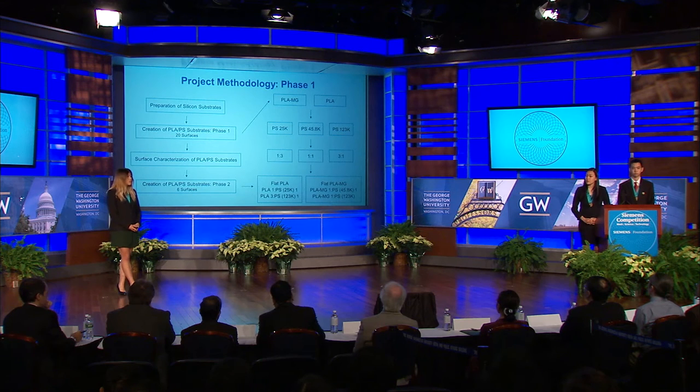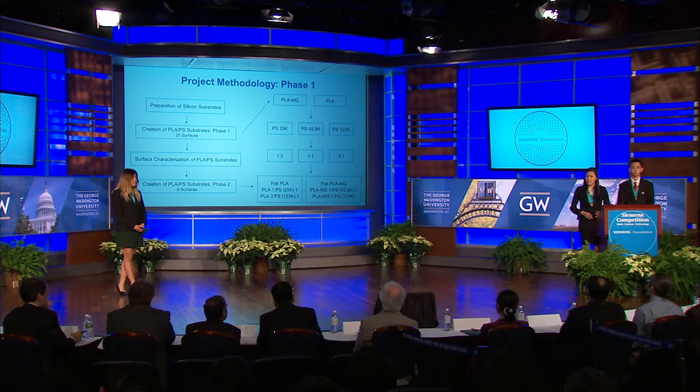After preparing one-by-one centimeter silicon substrates, we individually solubilized two forms of PLA and three molecular weights of PS with chloroform. These solutions were then mixed together in three volume ratios of PLA to PS, and the final solutions were spun cast onto silicon substrates to form thin films. The thin films were then annealed in a vacuum oven at 180 degrees Celsius for 72 hours. The substrates were then left in toluene treatment for 12 hours to fully dissolve the PS phase. We imaged and analyzed the resulting 20 surfaces using atomic force microscopy and nanoscope analysis software.